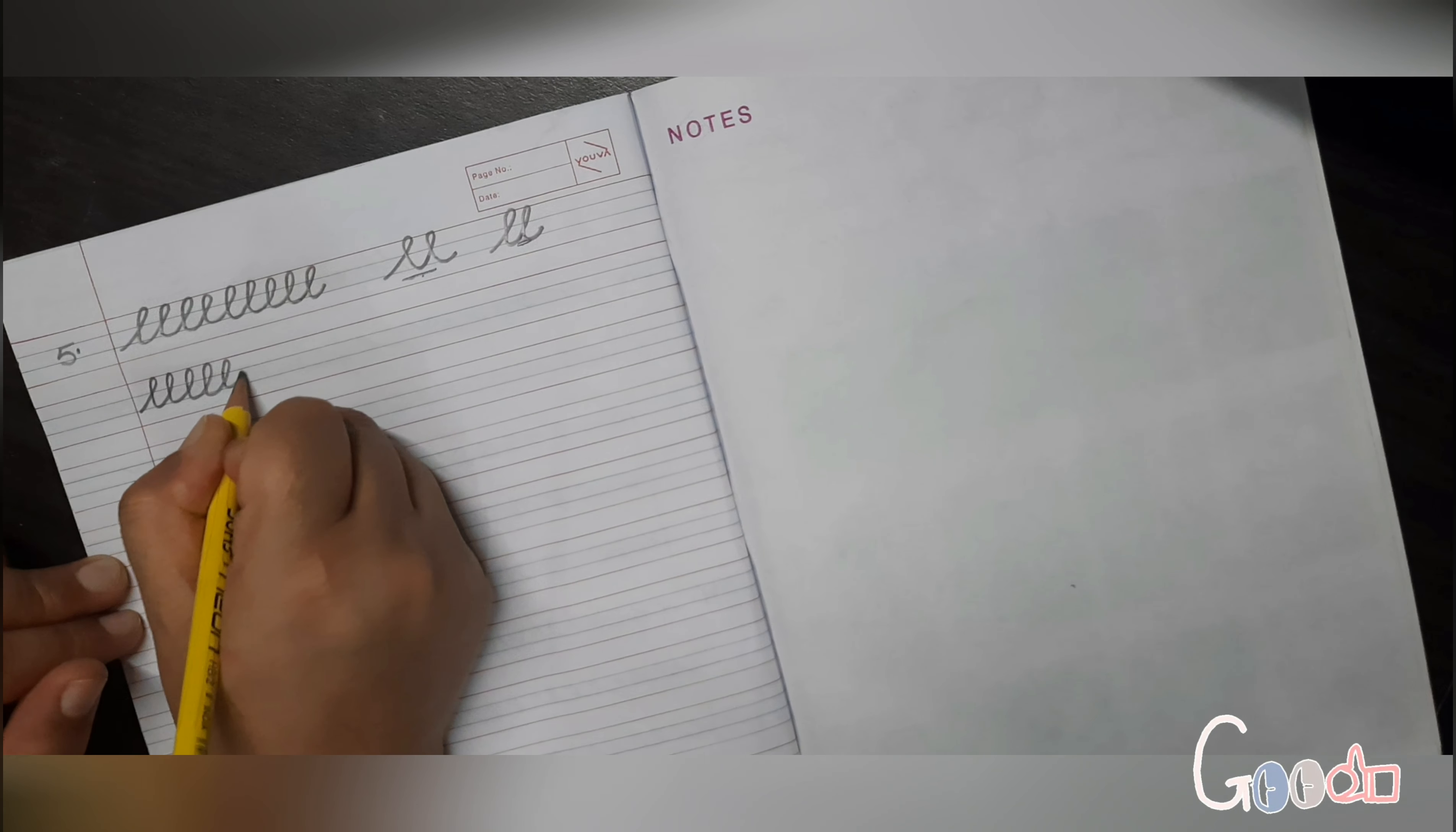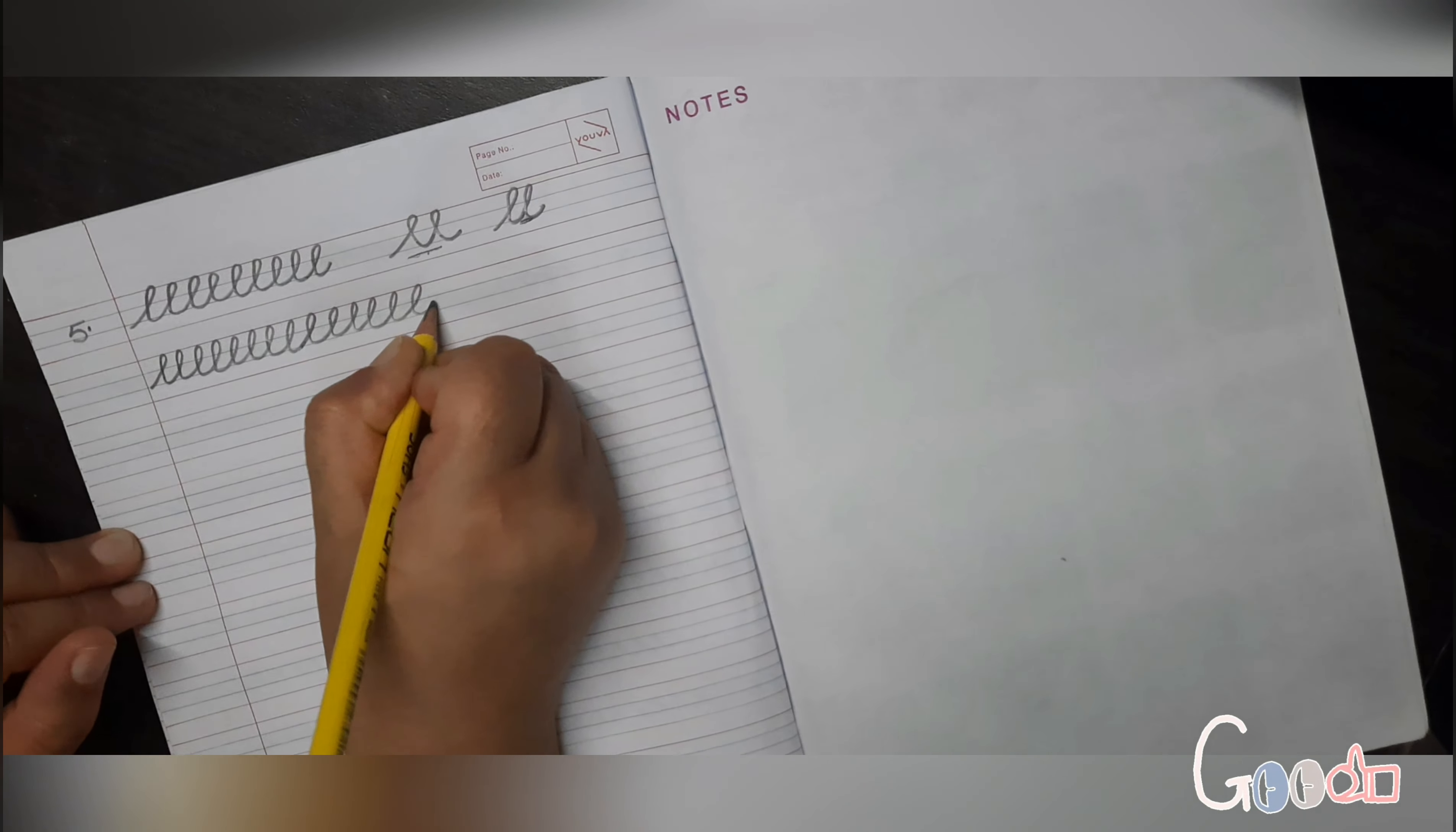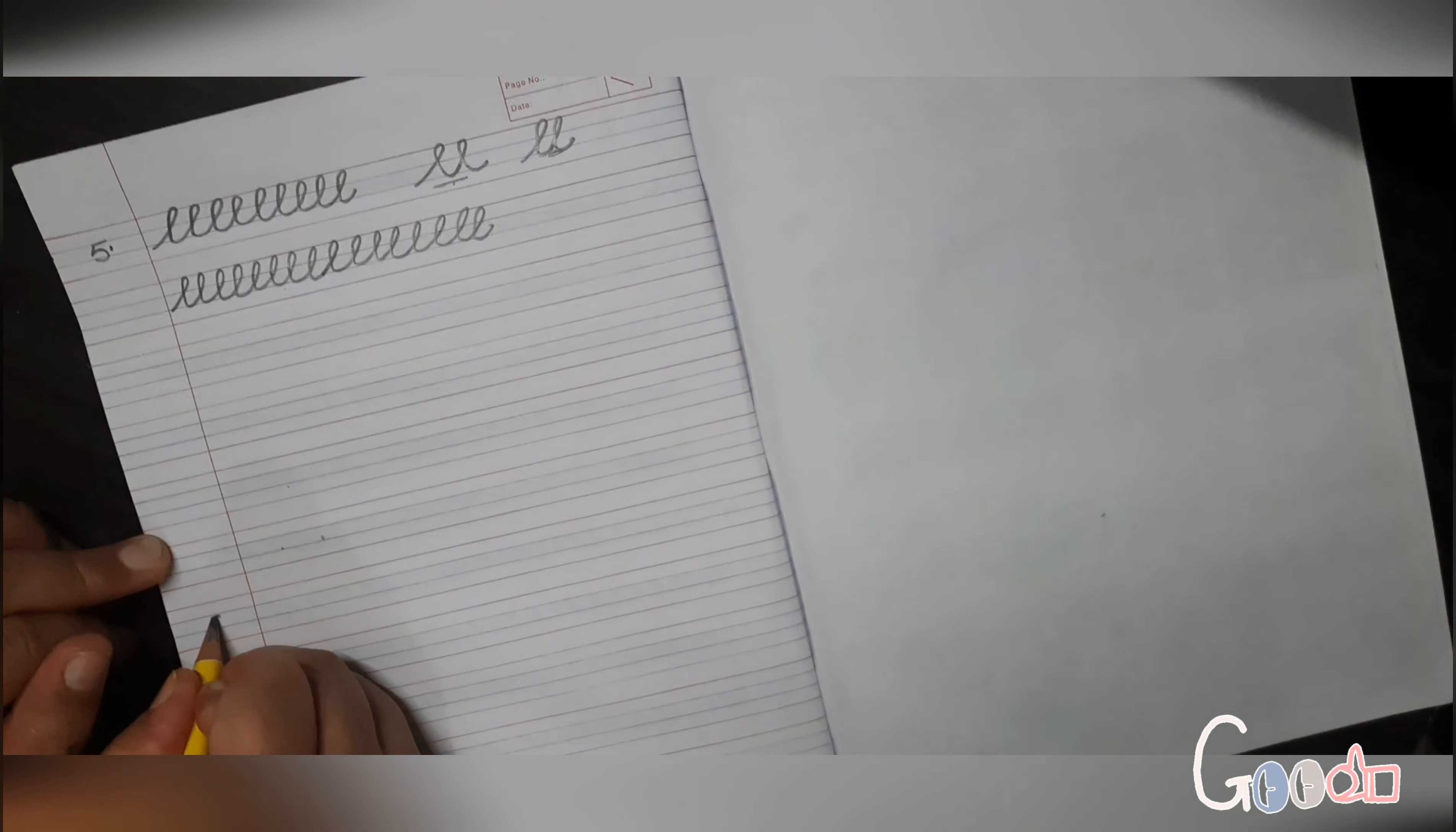L is similar to E, the only thing is that the loop will be from near red line this way. So in next five lines you'll do L.